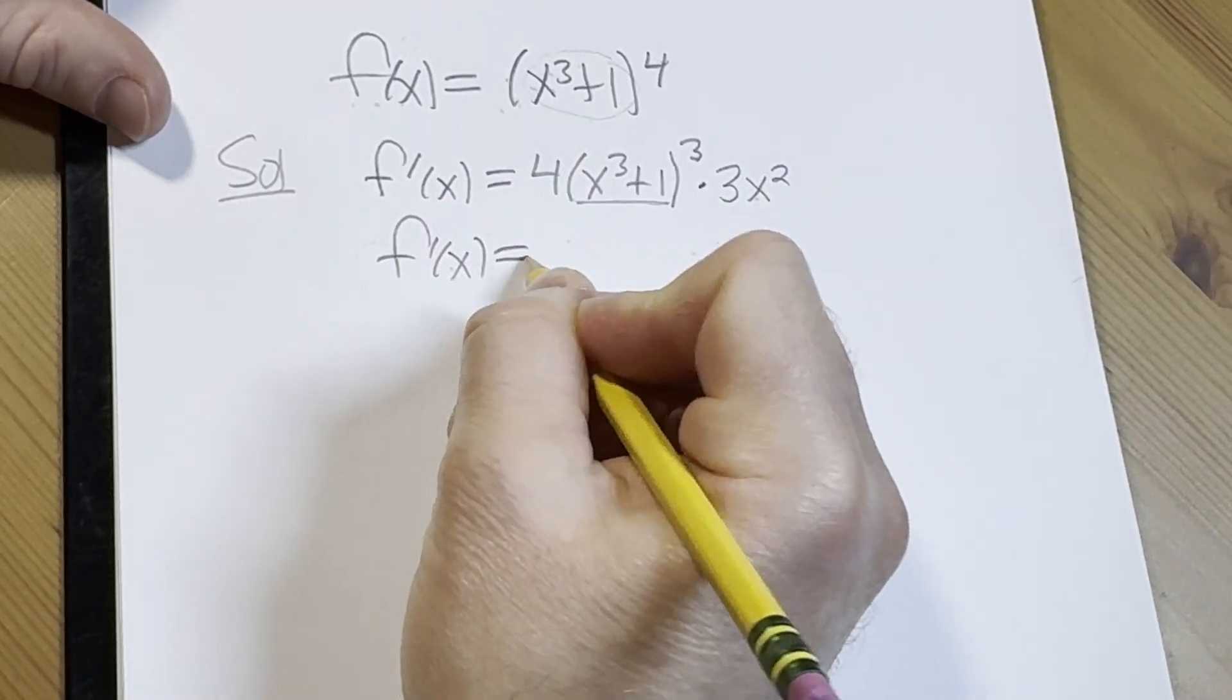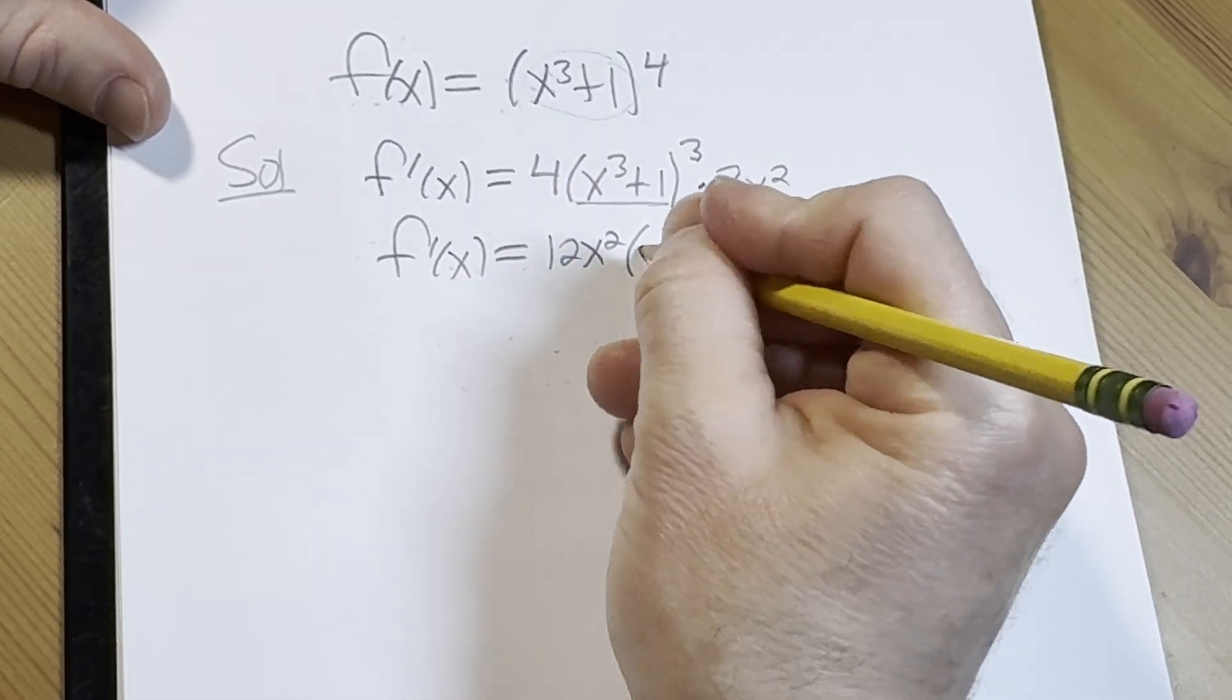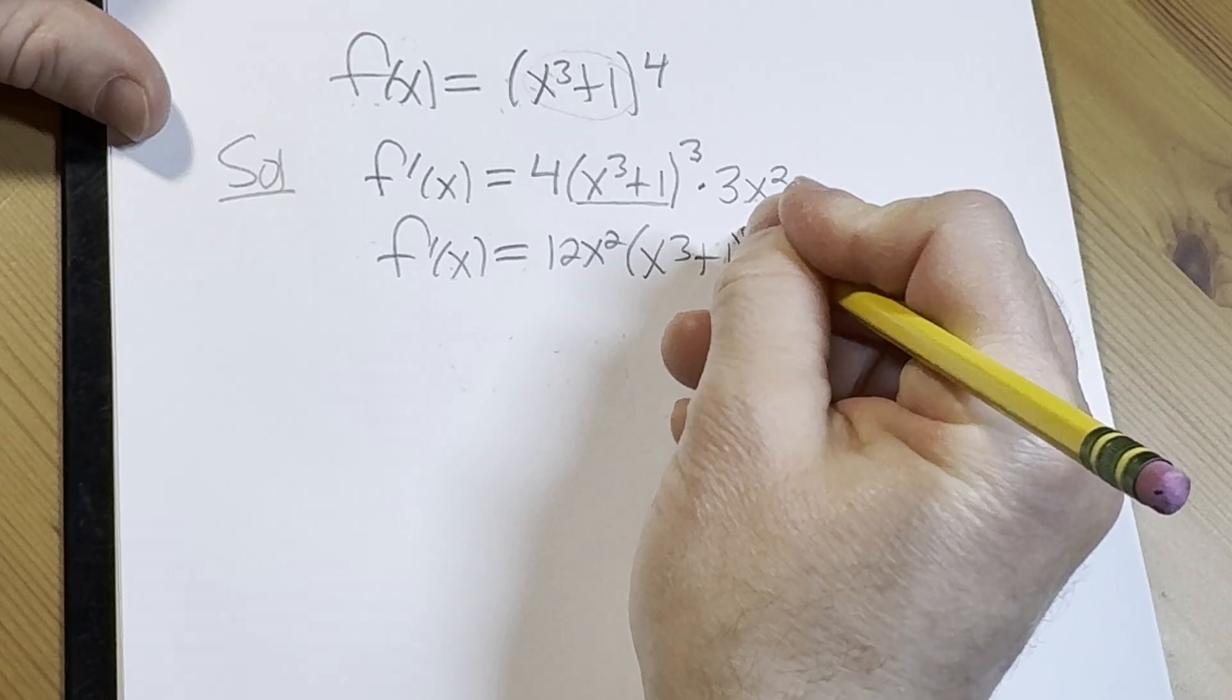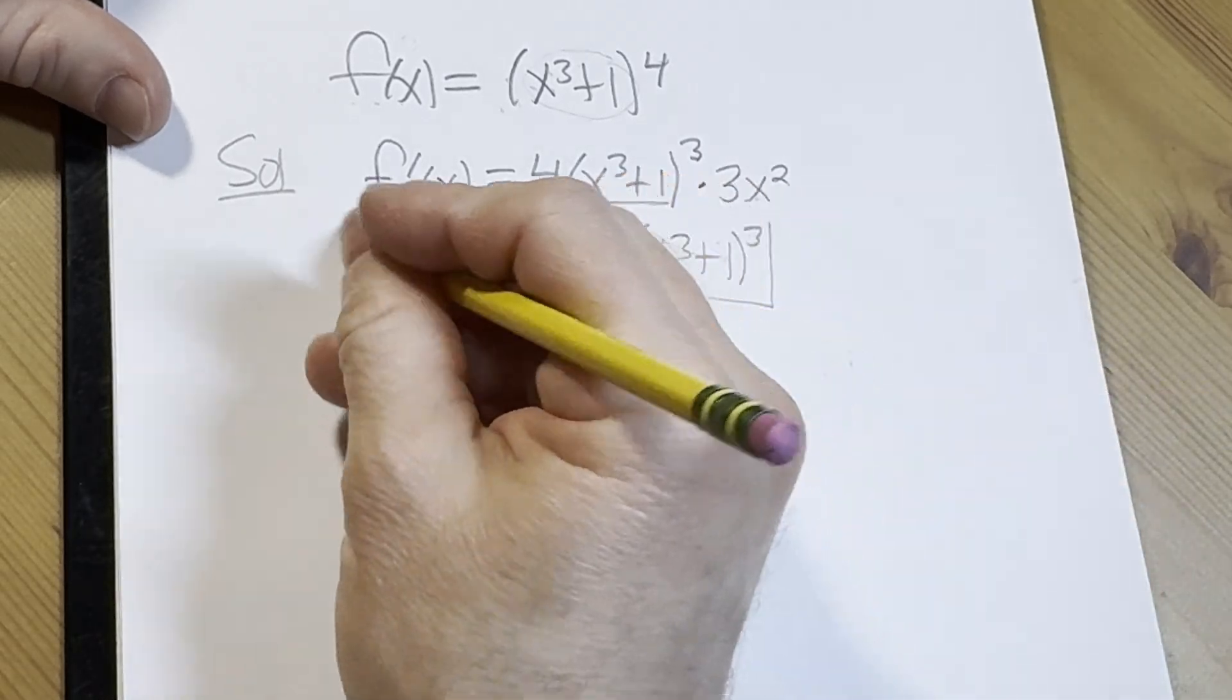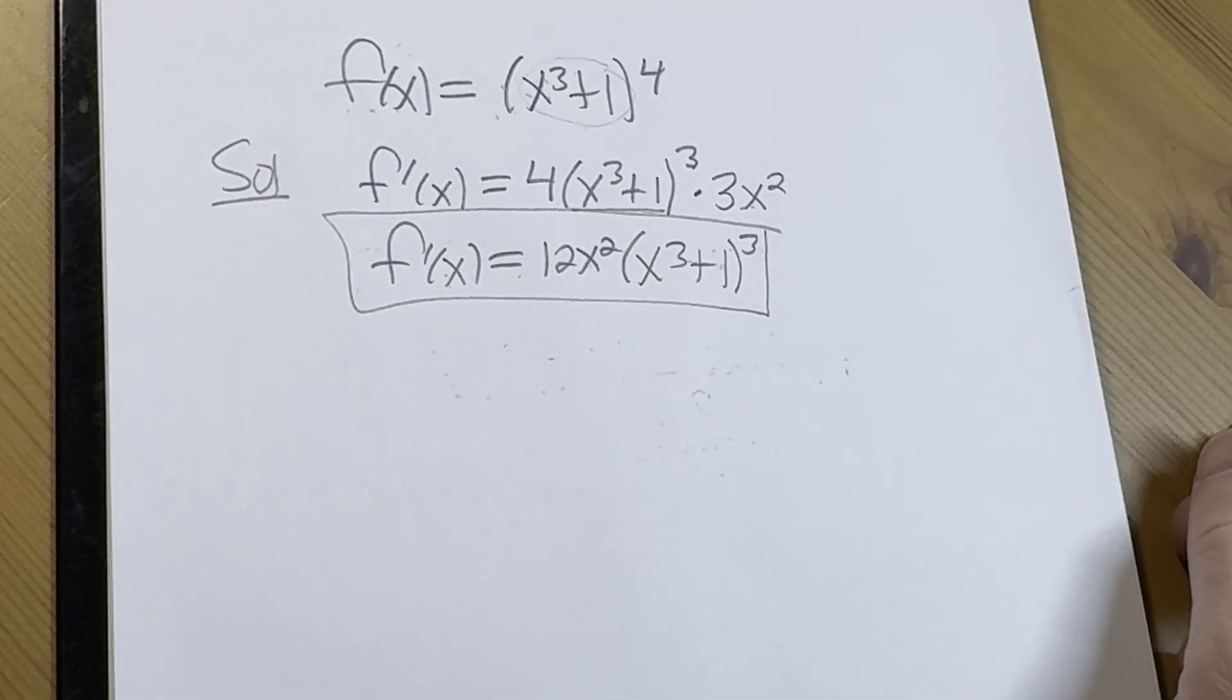So f'(x) equals... 3x² times 4 is 12x². And then we have (x³+1), and we're left with the exponent 3 here. And that would be the final answer to this problem. I hope it's been helpful.